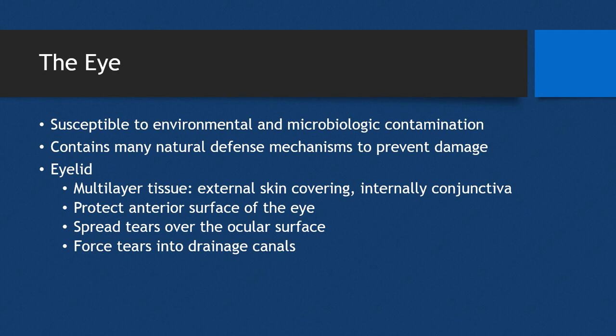I wanted to start with a brief overview of the eye, its structure, and natural defense mechanisms. Because the eye has a lot of mucosal tissue, it is susceptible to both environmental and microbiologic contamination — including bacterial and viral infection. However, the eye does have many natural defense mechanisms to help care for itself and prevent damage.